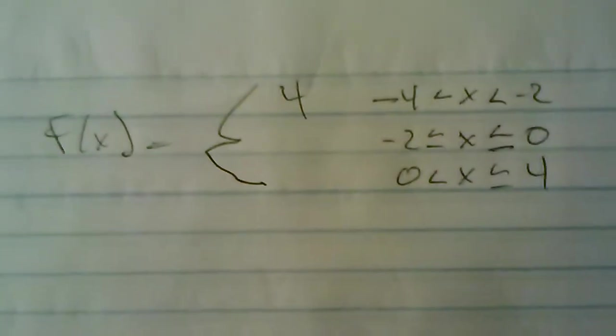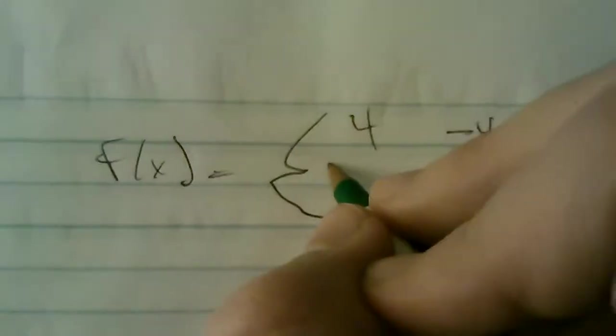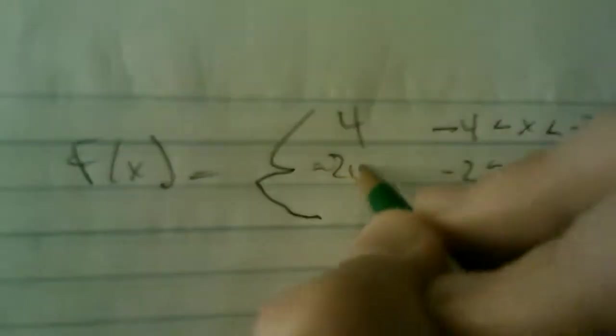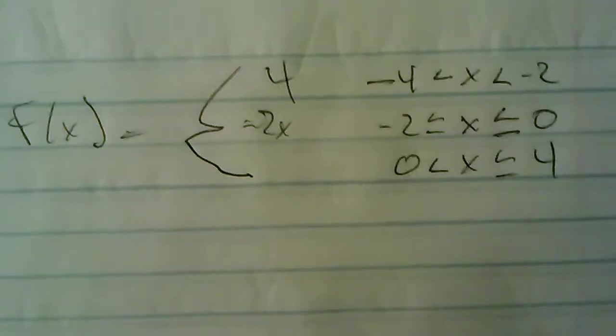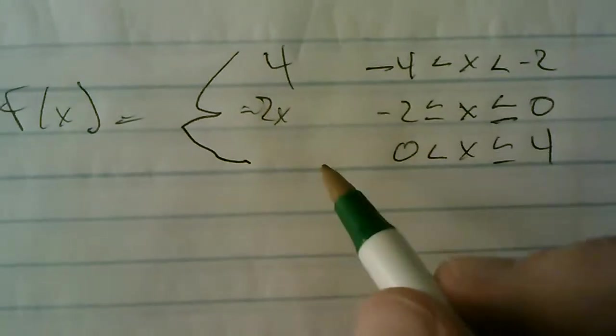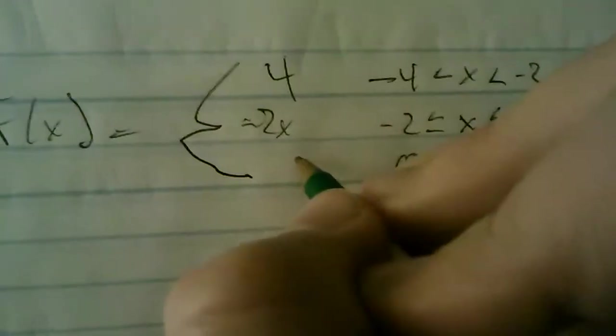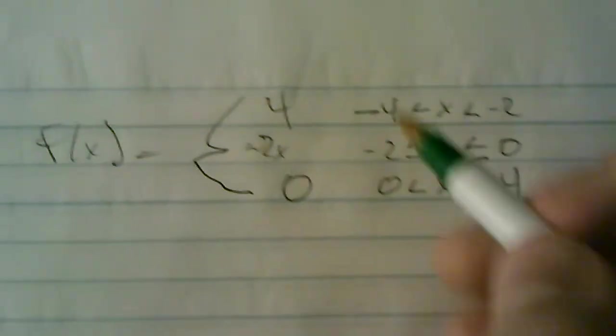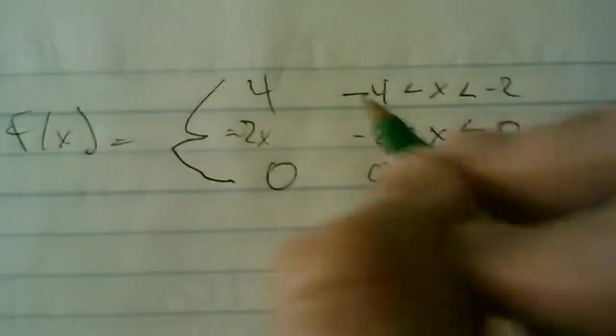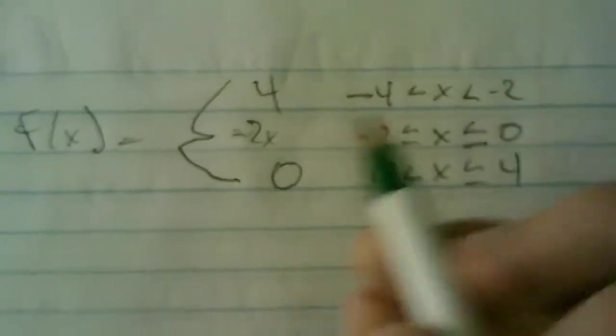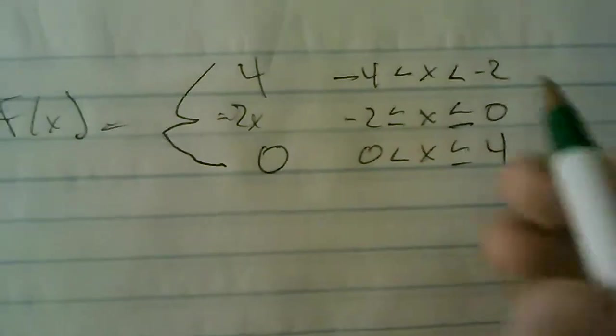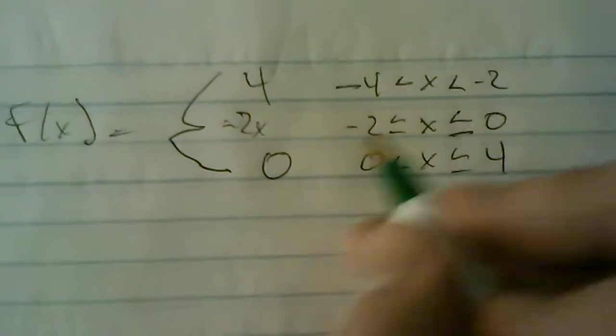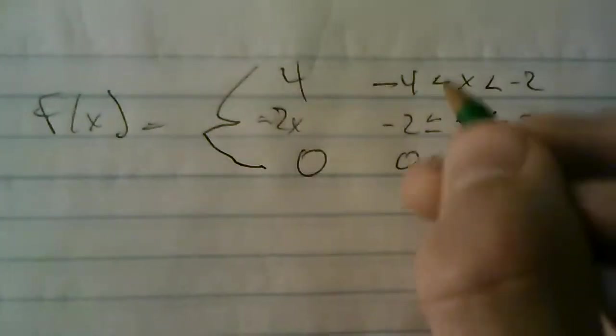We'll make this four. We'll make this negative two x. And then we're going to make this right here zero. So we want to find if it's continuous. We know it's continuous through these values right here because there's nothing to break it up. There's no piecewise function here. So the only possible break would be at negative two because that's where the function shifts.